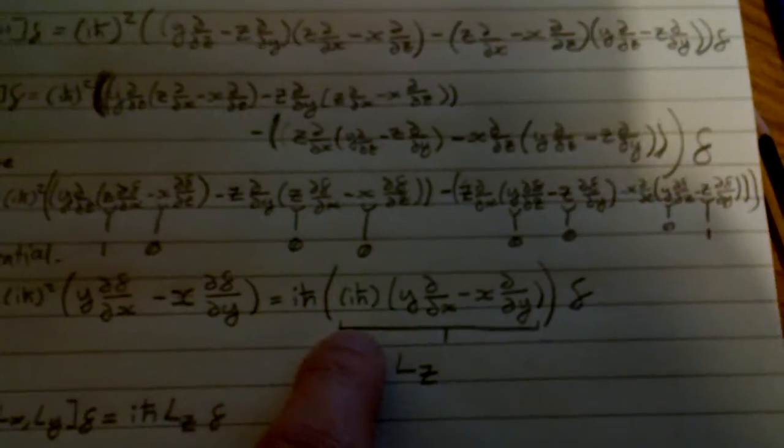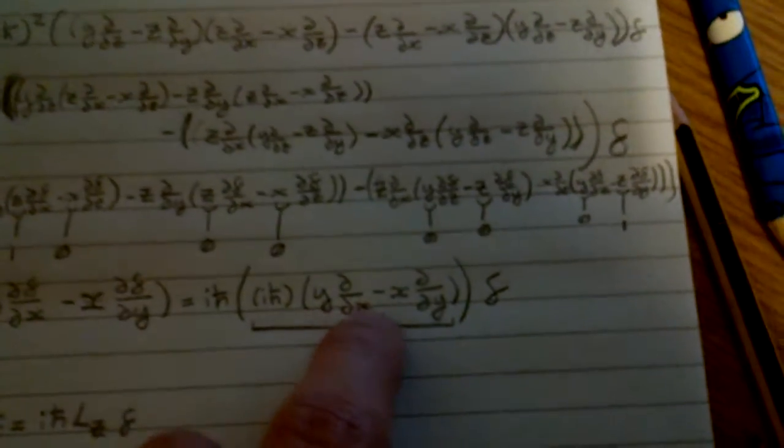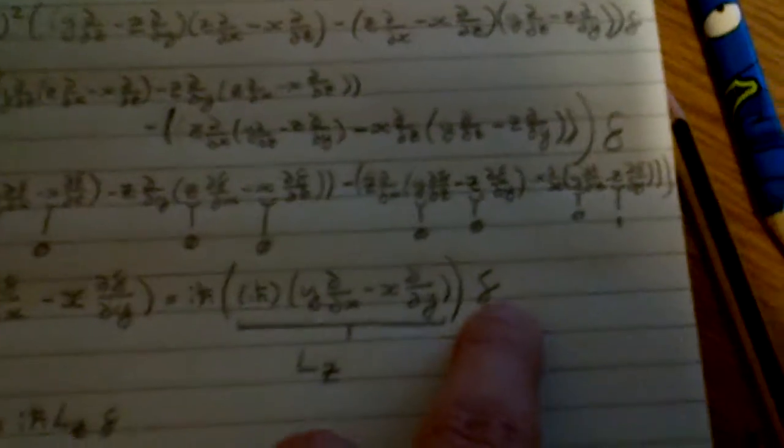So then you take out all the terms that go to 0 and you end up with this with the IH bar squared from earlier. So you can separate out into IH bar times IH bar YD by DX minus XD by DY, which is LZ, times F.